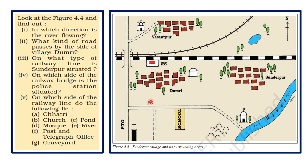Regarding which side of the railway line various features lie: Chhatri is to the south, church is to the south, pond is to the north, mosque is to the north, river is to the south, post and telegraph office is to the south, and graveyard is also to the south of the railway line.